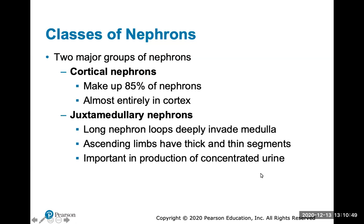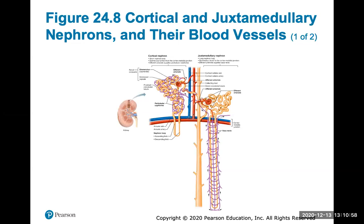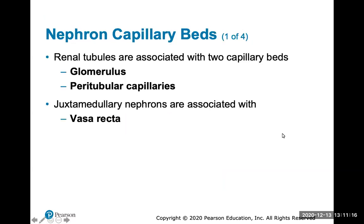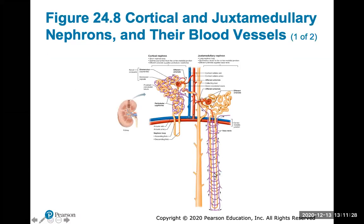There are two types of nephrons: cortical nephrons and juxtamedullary nephrons. Blood capillaries surround different parts of the tubule system to help with reabsorption back into the bloodstream or secretion of ions and electrolytes back into the urine filtrate. The renal tubules are associated with two capillary beds: the glomerulus and the peritubular capillaries. Juxtamedullary nephrons are associated with the long vasa recta capillaries, which surround the nephron loop.